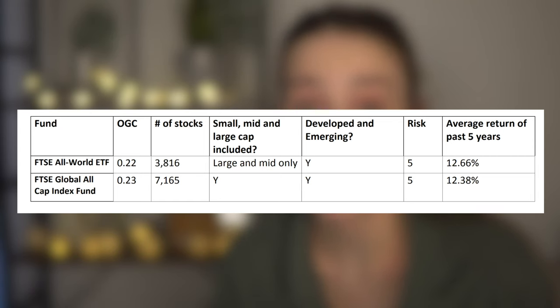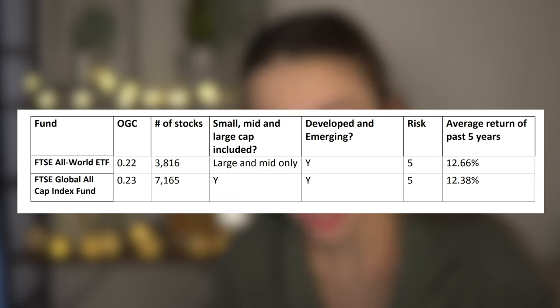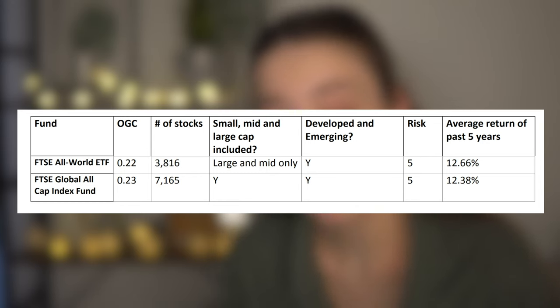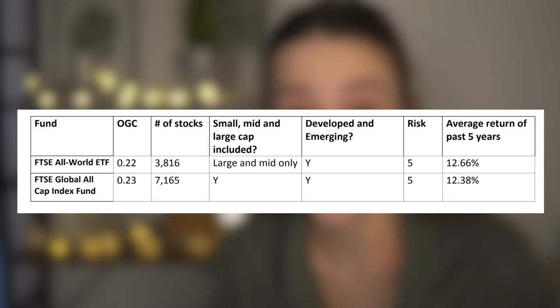I've put together a table comparing these two funds. Looking at ongoing charges, both are very low: the Global All Cap charges 0.23% and the All World charges 0.22%, so there is only a 0.01% difference. You could argue that 0.01% makes a meaningful difference over the long term with large amounts of money, but both are very low. The All World does beat the All Cap slightly on ongoing charges, but you need to weigh everything before making a decision.